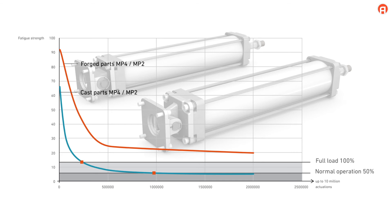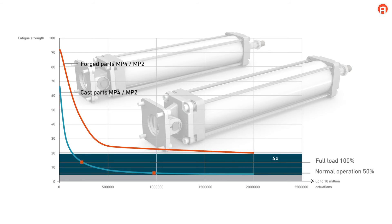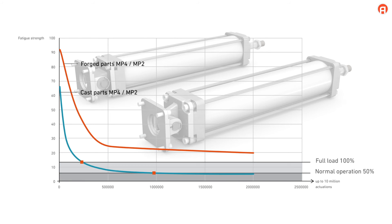The fatigue strength of forged cylinder mountings is four times greater than that of die-cast aluminum parts. Even at full cylinder load capacity, forged cylinder mountings offer a safety factor of 1.5. With die-cast aluminum cylinder mountings, cylinders only have a maximum load capacity of 40%.